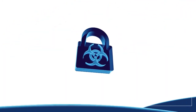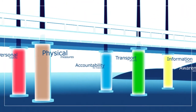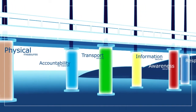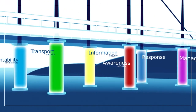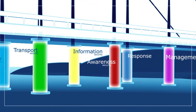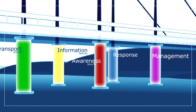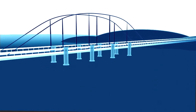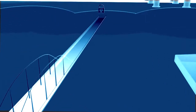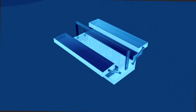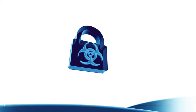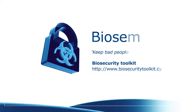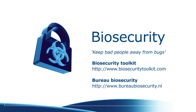It is important that we thoroughly protect high-risk pathogens and what we know about them by focusing on all eight pillars of good practice. Biosecurity can be implemented in your organization — the biosecurity office can provide you with information and support for implementation of appropriate biosecurity measures.